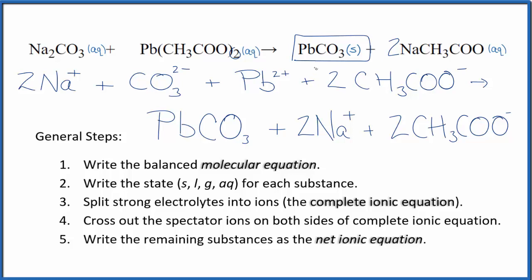Because this lead(II) carbonate is a solid, we don't split that apart. We only split aqueous solutions, strong electrolytes apart, so we're going to keep this together here since it's a solid. And then we have two sodium ions and then two of these acetate ions here. So this is the complete ionic equation.